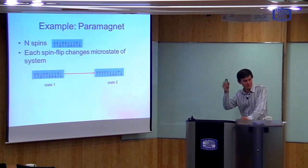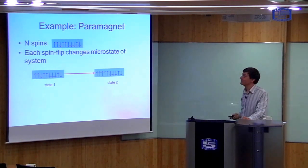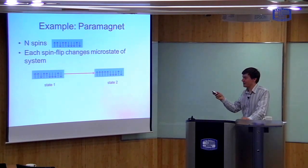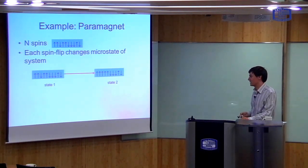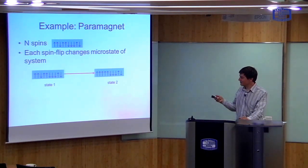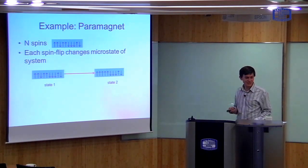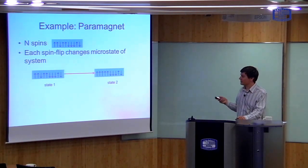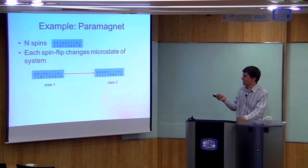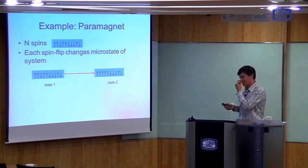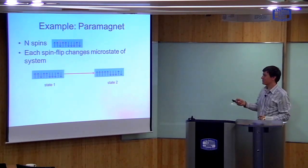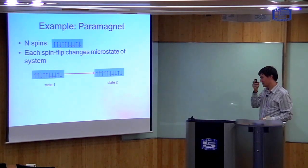I want to give a completely different example to illustrate how this abstraction helps. Another example is a paramagnet — a material something like iron — where each atom has a spin, so each atom has a magnetic moment, but at room temperature there is no net spin. The directions of the arrows are random: some can point up, some can point down. For the ideal paramagnet, we assume there's no interaction between the spins.